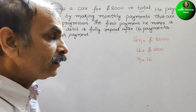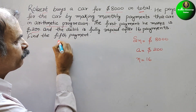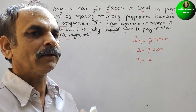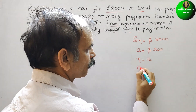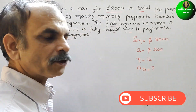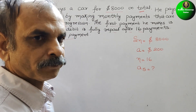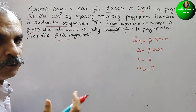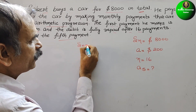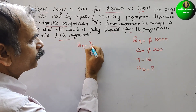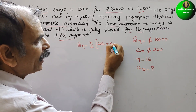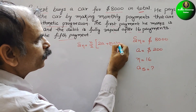What is your question? They have told: what is his fifth payment? That means we have to find out A5. Now first we will write the SN formula. SN formula is: SN is equal to N by 2, and here comes your 2A plus N minus 1 into D.